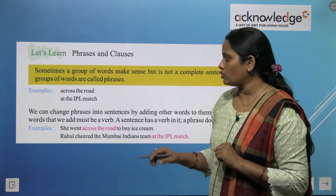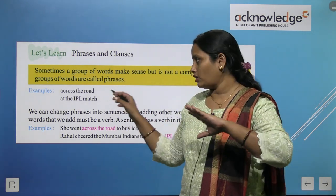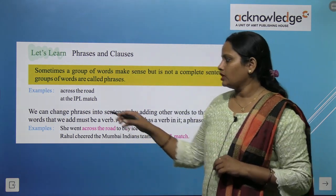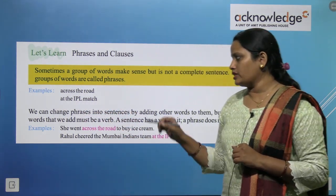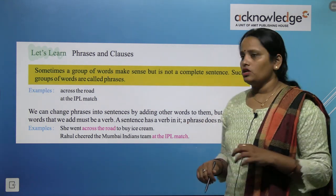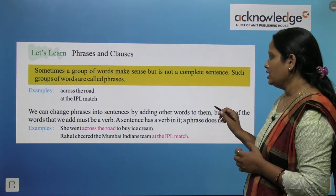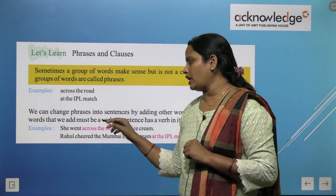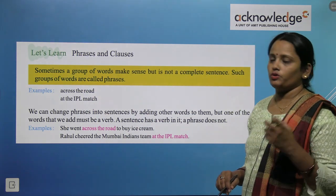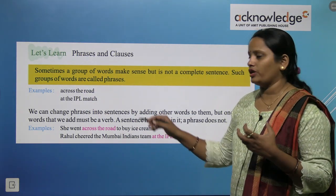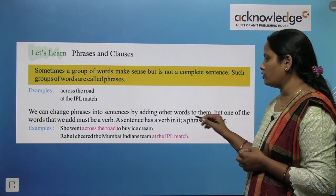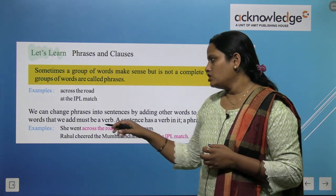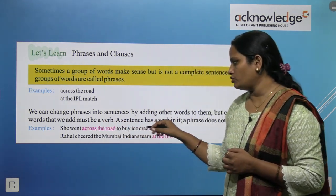For example: 'across the river', 'across the road'. We can change phrases into sentences by adding other words to them. But one of the words that we add must be a verb — a sentence has a verb in it and a phrase does not. For example: 'She went across the road to buy ice cream.'